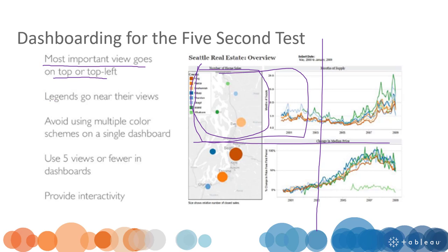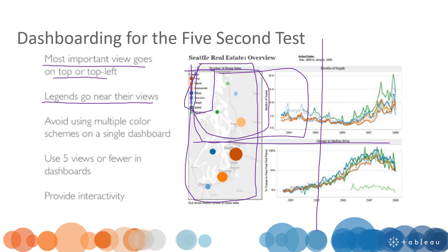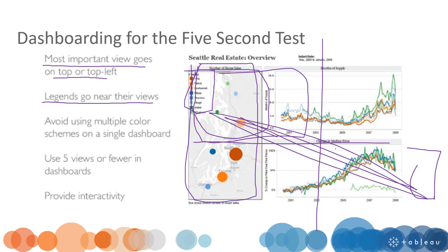If you are using a legend, the legend should go near the viewers. For example, if we have a proportional symbol map, put the legend next to that map so the viewer can make a quick reference to it. Do not put the legend somewhere that the user needs to go back and forth to identify what you're talking about.